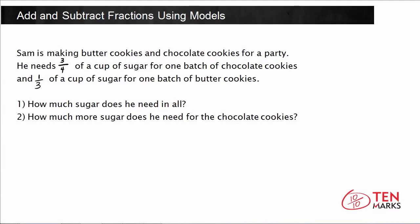Let's take a look at the word problem written below. Sam is making butter cookies and chocolate cookies for a party. He needs 3 fourths of a cup of sugar for one batch of chocolate cookies and 1 third of a cup of sugar for one batch of butter cookies. We're going to answer two questions: how much sugar does he need in all, and how much more sugar does he need for the chocolate cookies?